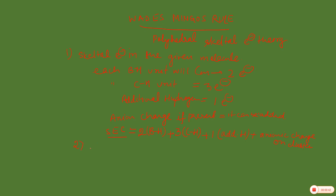In the second step, we find out the number of electron pairs, which is calculated by dividing the skeletal electron count by 2. In the third step, we find the number of vertices, which equals the number of boron and carbon atoms, and this value is denoted by n.